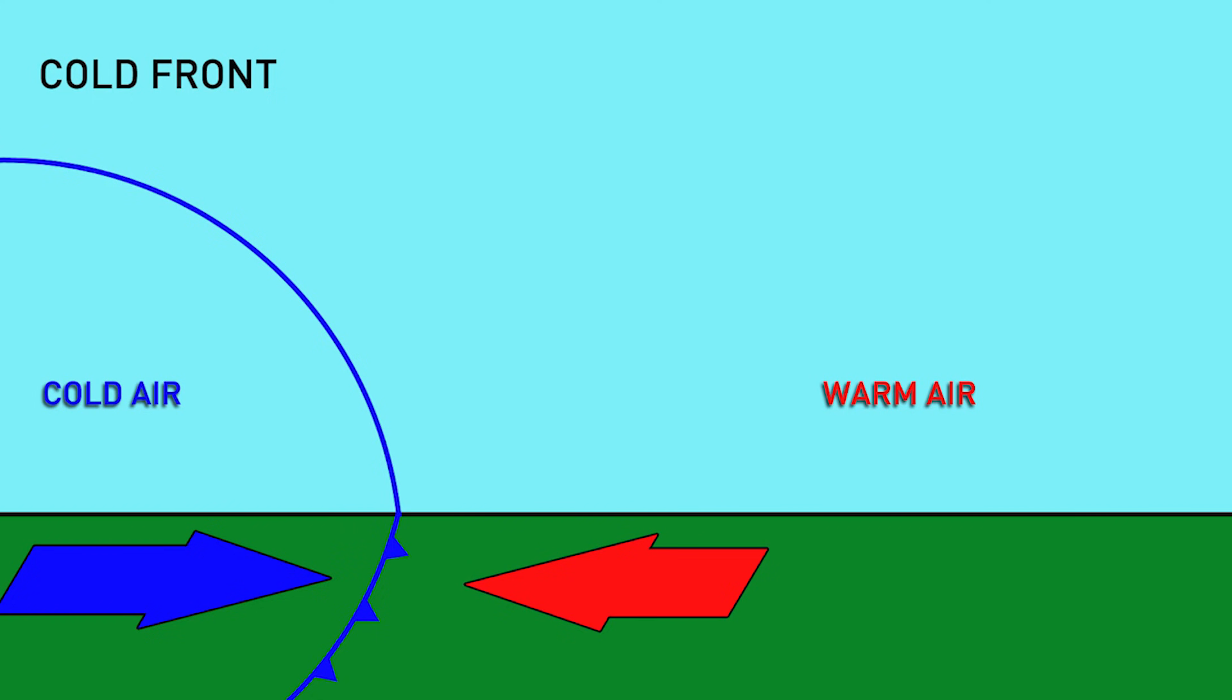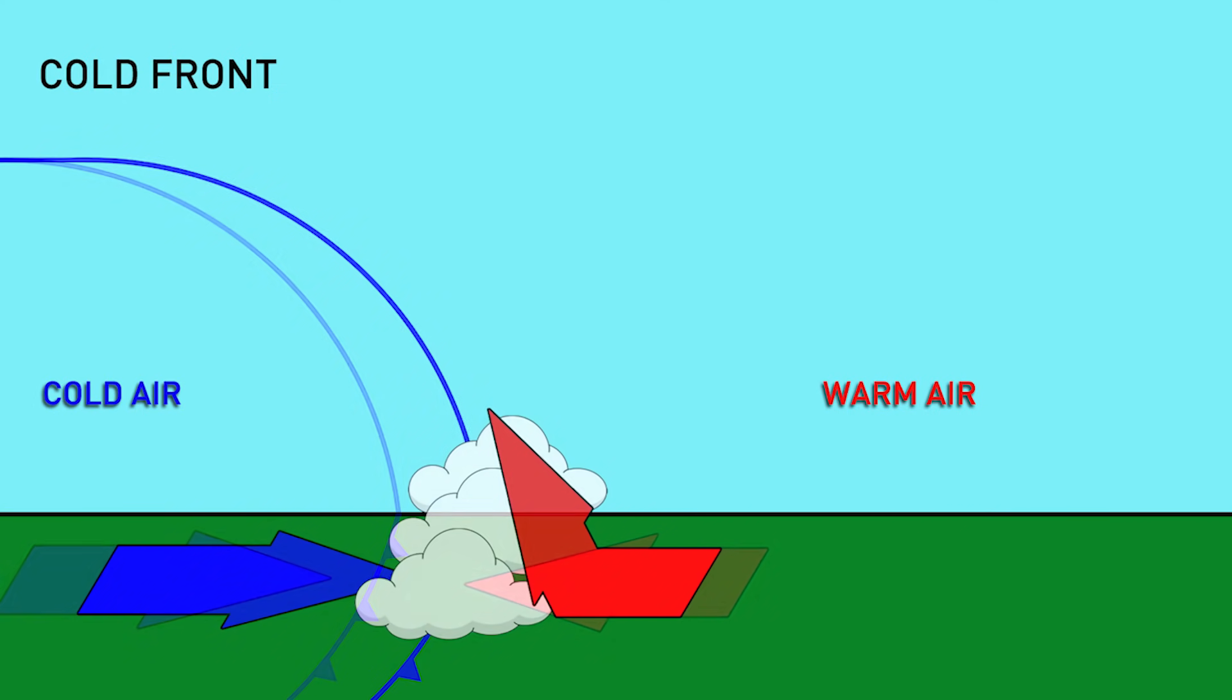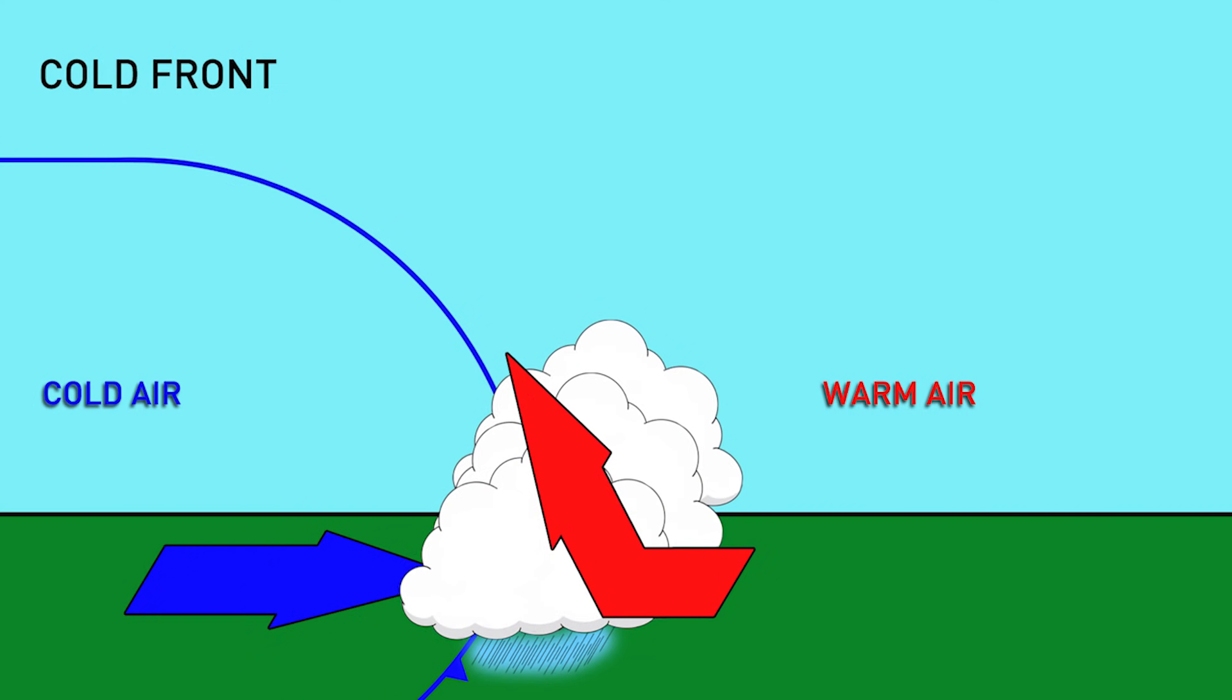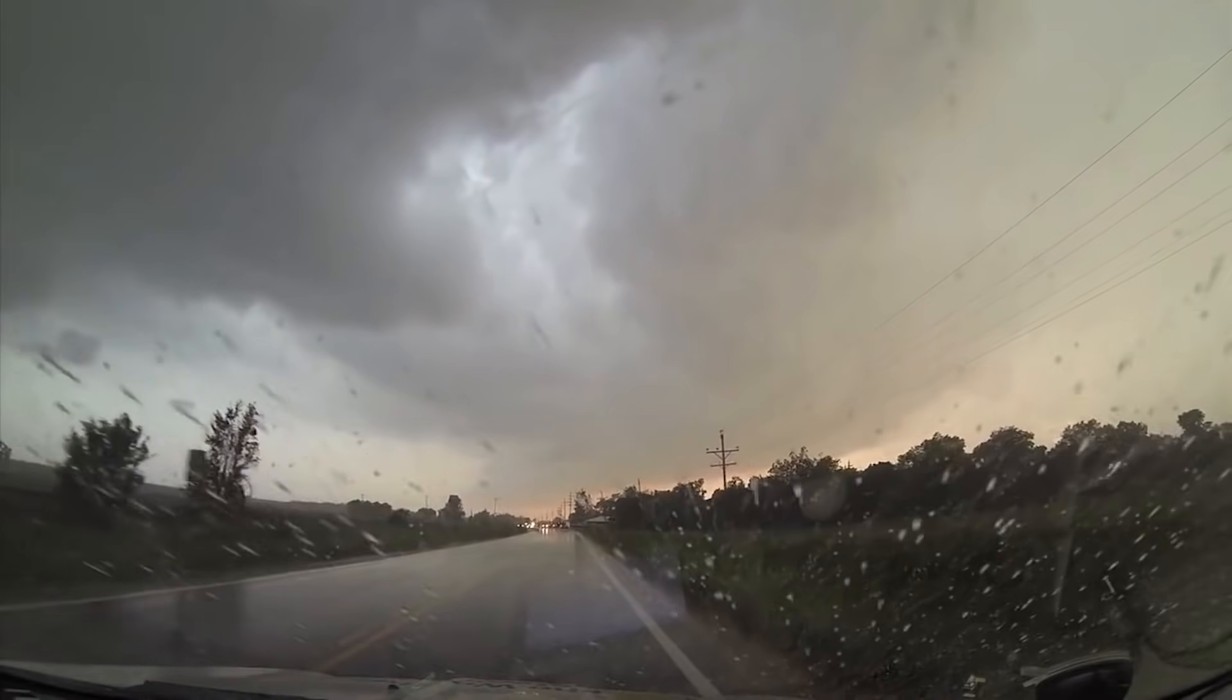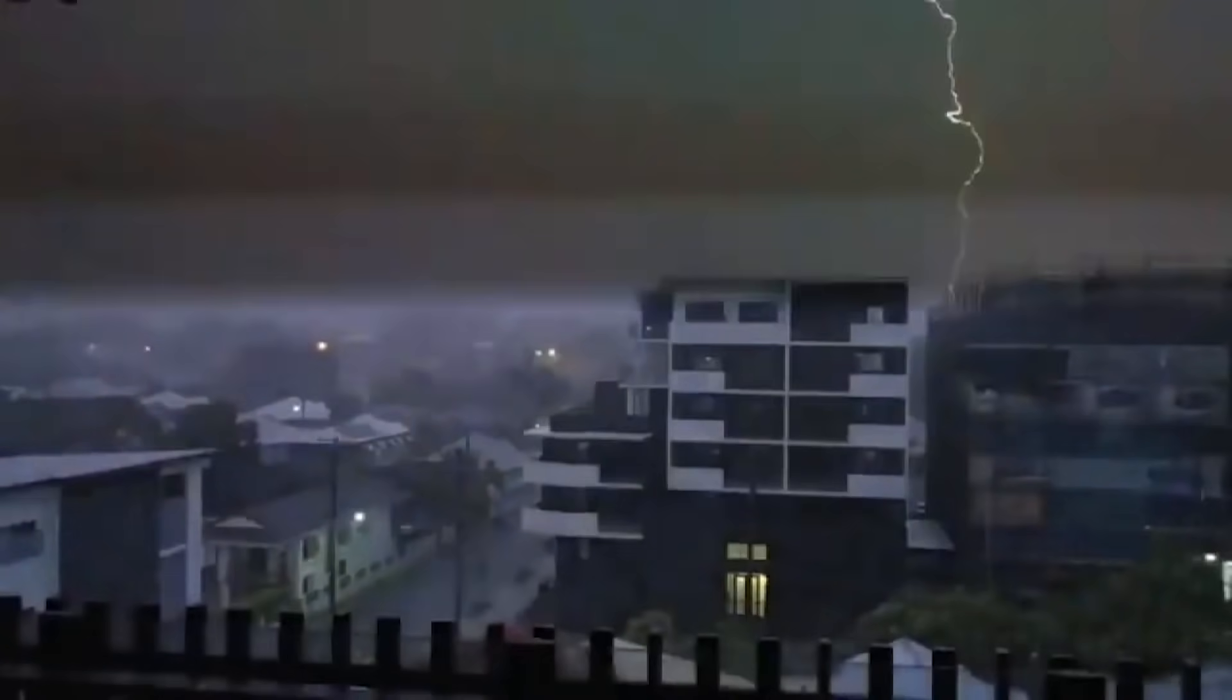If a cold, dry air mass pushes into a warm, humid air mass, we have a cold front. And as the colder, denser air advances, it forms a steep wedge that forces the warm air in its path upward very quickly. Clouds form right at the front. This typically produces very abrupt, sometimes very intense active weather.